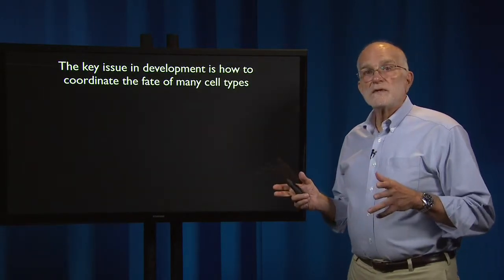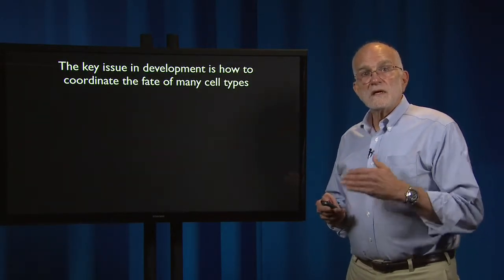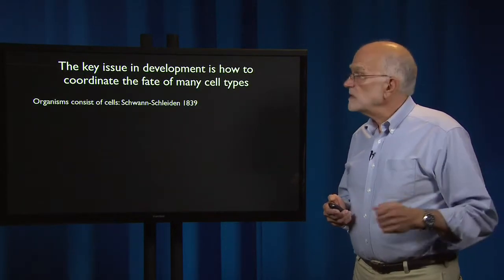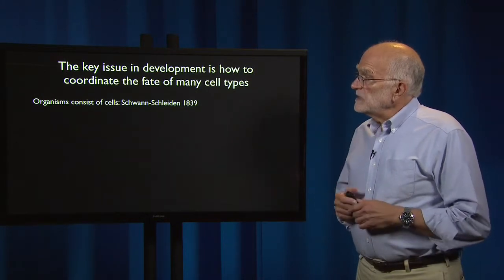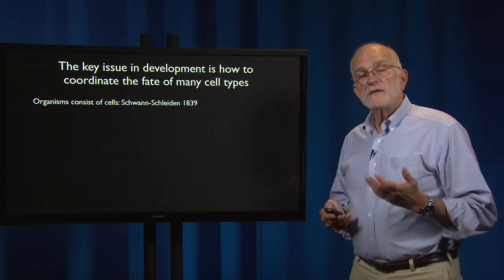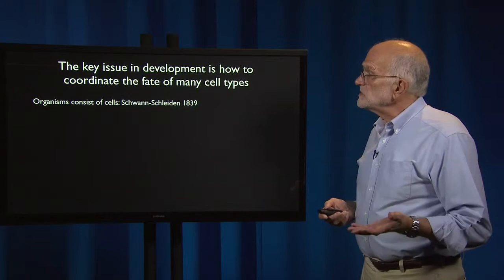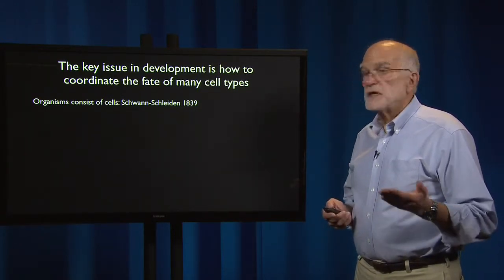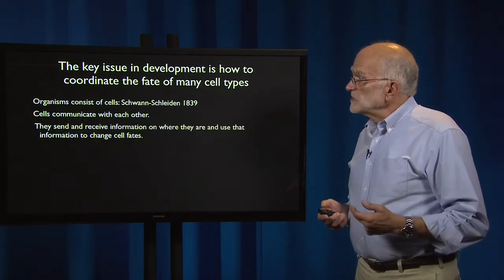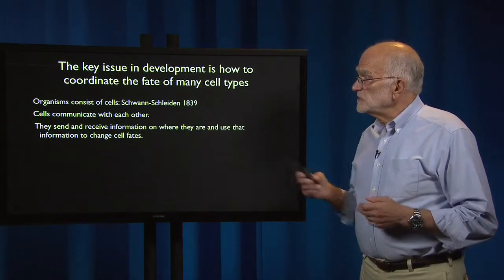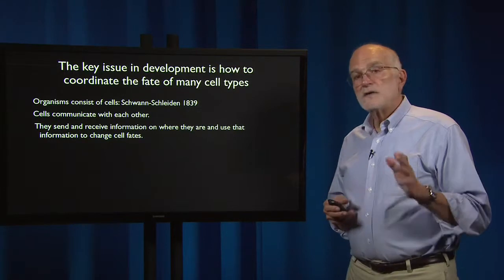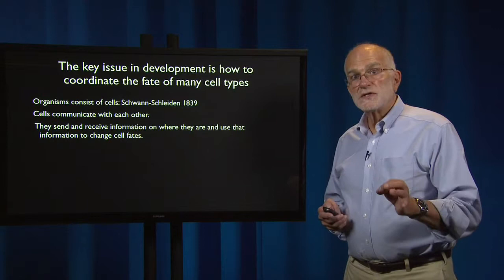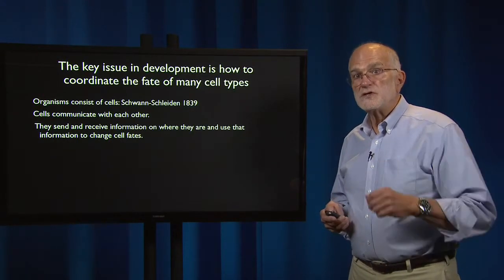The key issue in development is how to coordinate what many different cell types are becoming. If we go back in the history of biology, the fact that organisms are built out of cells is something we've known since 1839 — that's the Schwann-Schleiden cell hypothesis. These cells communicate with each other; they send and receive information on their spatial location and use that information to change their cell fates, that is, what they differentiate into.